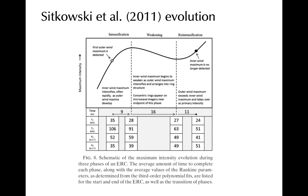A schematic of a typical average eyewall replacement cycle is shown here, summarizing what we have discussed so far. Time is on the x-axis and a proxy for intensity is on the y-axis. This is an approximate evolution of cyclones experiencing replacement cycles occurring within a steadily favorable environment for intensification. Some intensification may occur after the outer wind maximum is first detected, denoted by a white dot. The schematic then indicates that about 9 hours later, weakening of the inner wind maximum will begin, and concentric rings will appear on passive microwave or radar imagery.